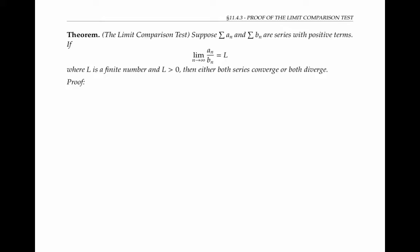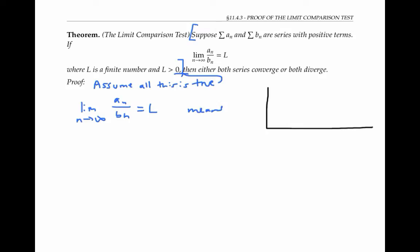To prove this theorem, let's start by assuming that all the hypotheses are true — that is, all the stuff in brackets here is true. The limit as n goes to infinity of a sub n over b sub n equals L means that if I plot the numbers one, two, three, and so on on the x-axis as the values of n, and I plot the ratios a sub n over b sub n on the y-axis, those ratios are going to settle down to a value of L as n goes to infinity.